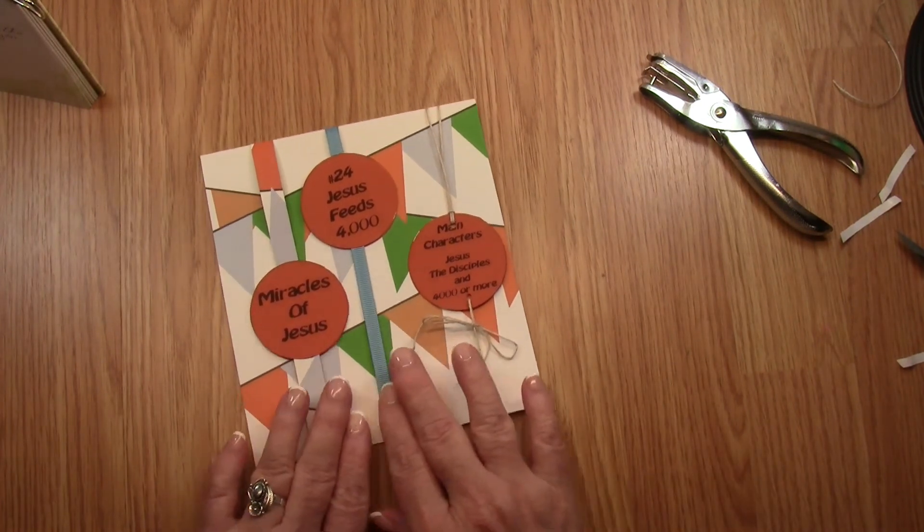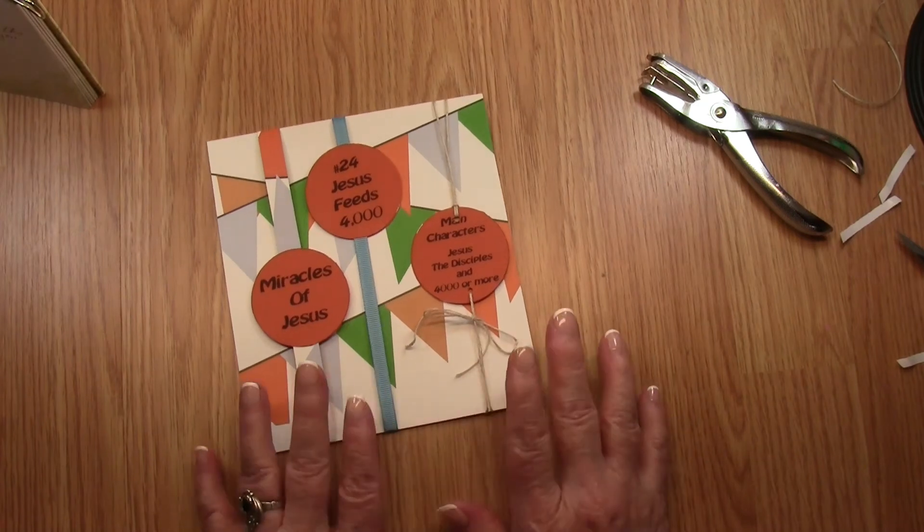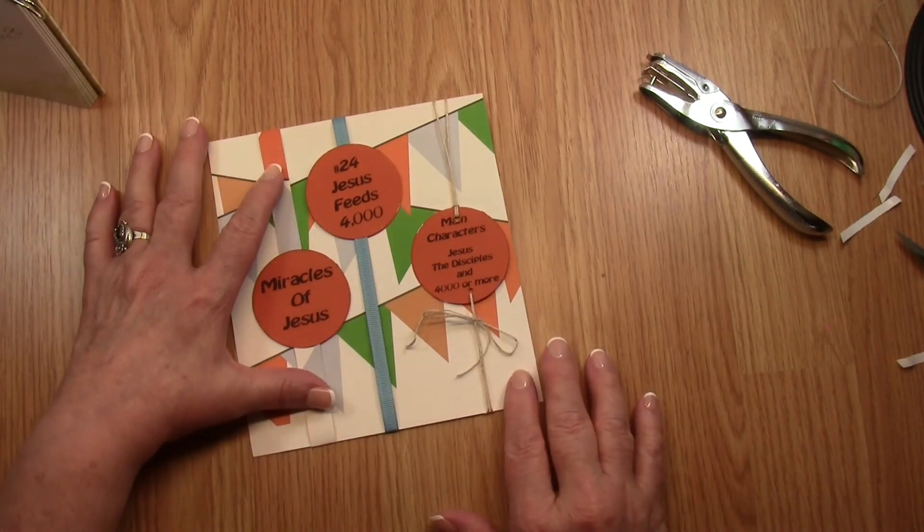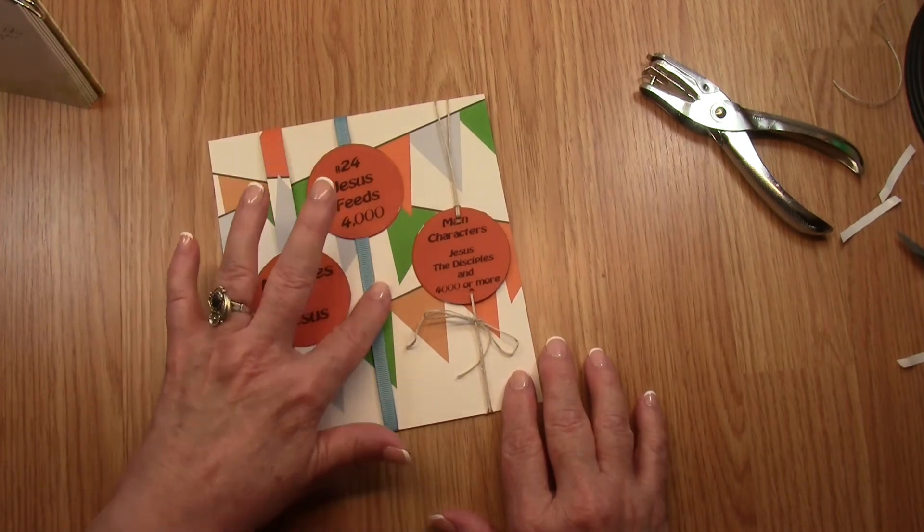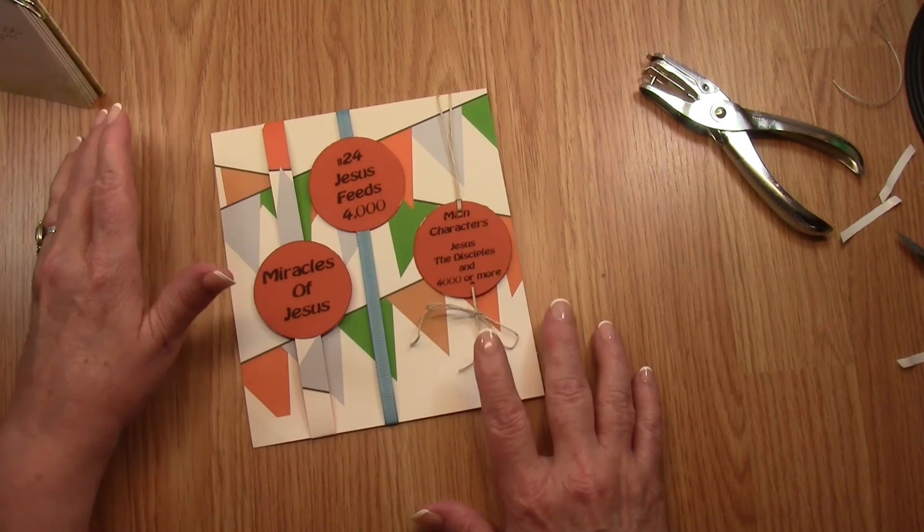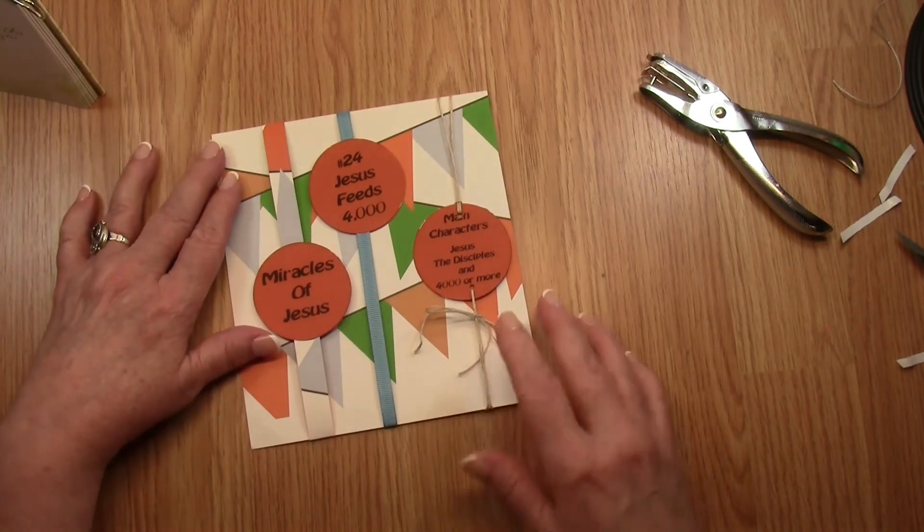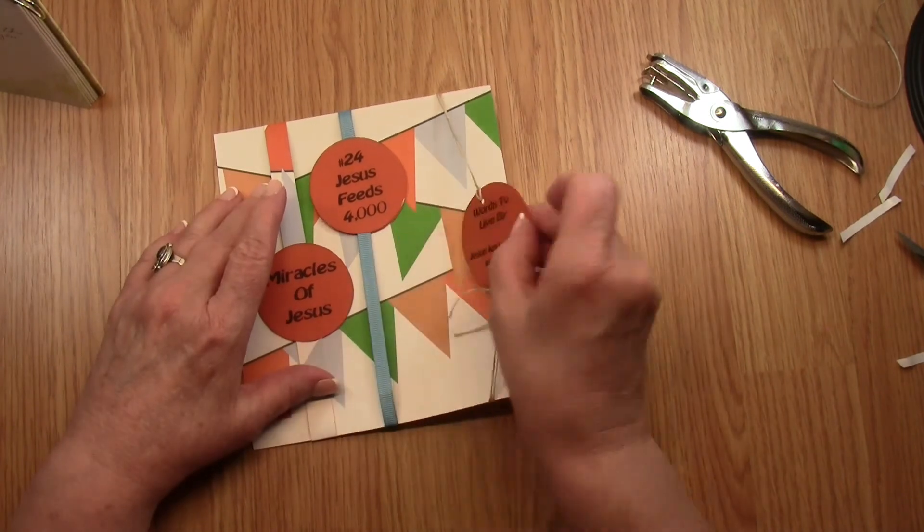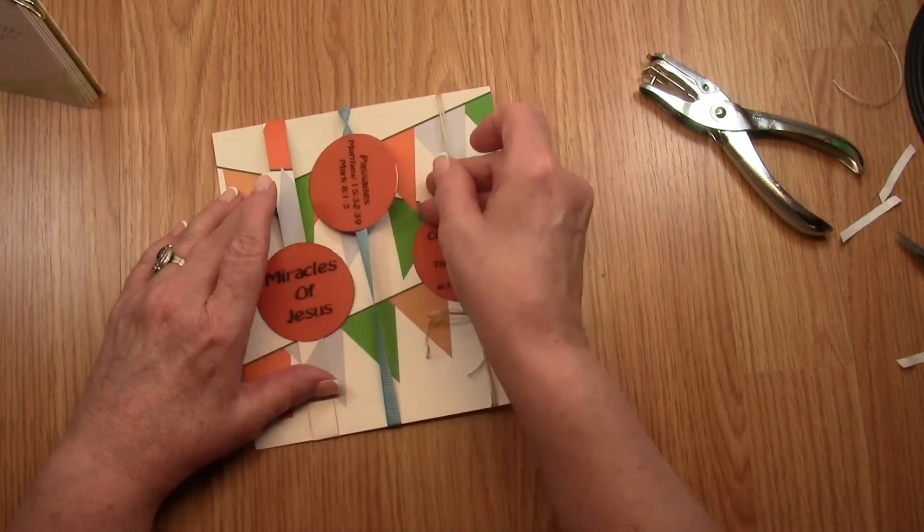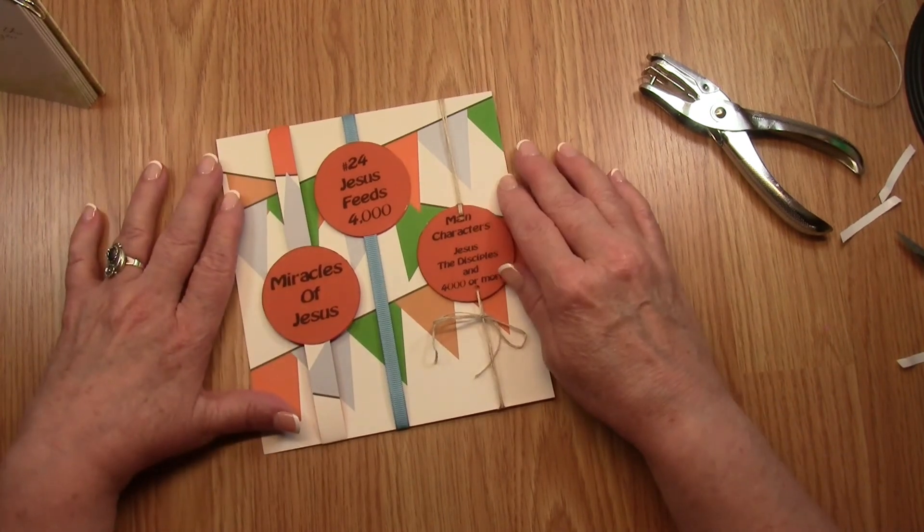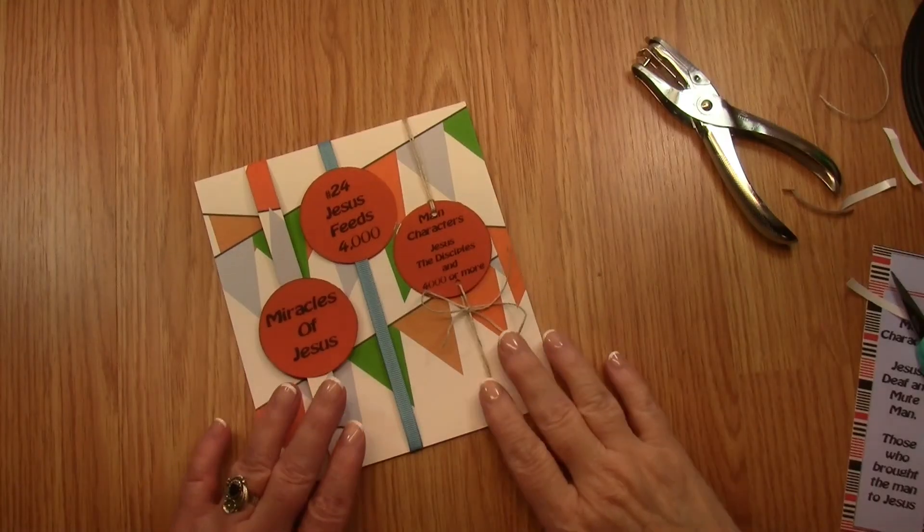Now remember, you're only going to use one of these examples. If you use the paper, you'll need three strips of paper. If you use the ribbon, you'll need three ribbons. And if you use the string, you'll need three sets of string for this page. It's such a cool page with the labels on the back as well.